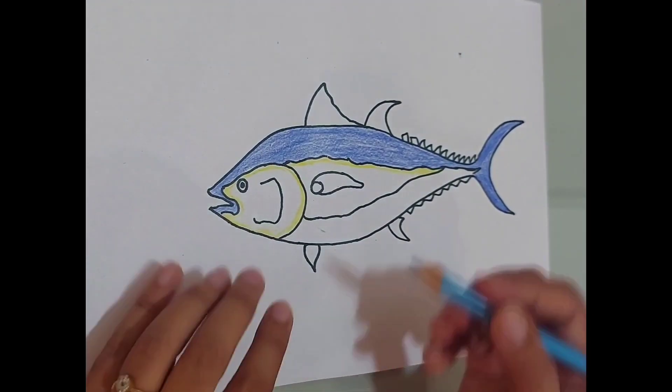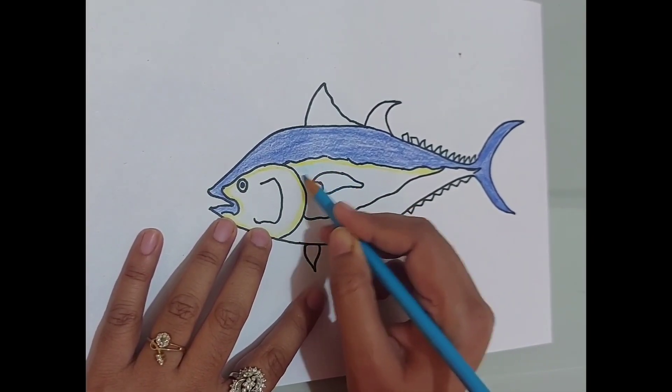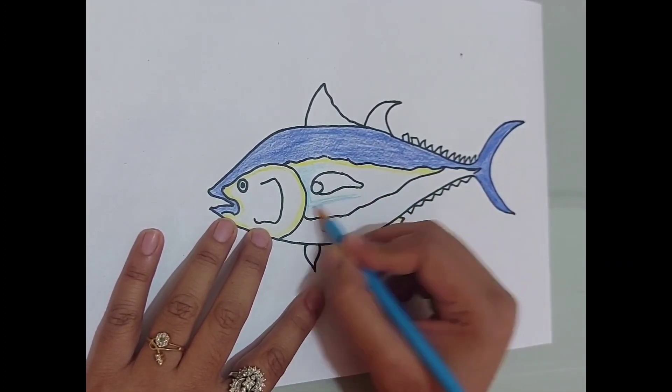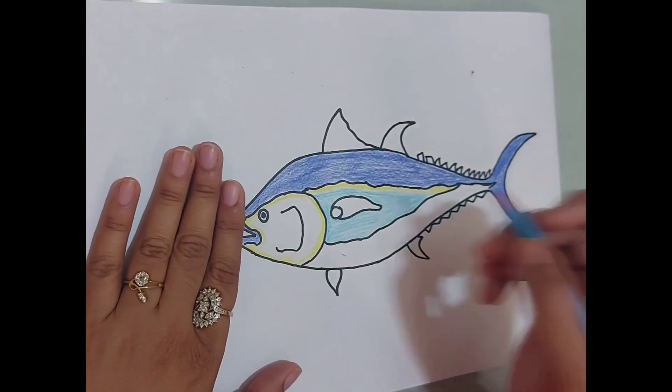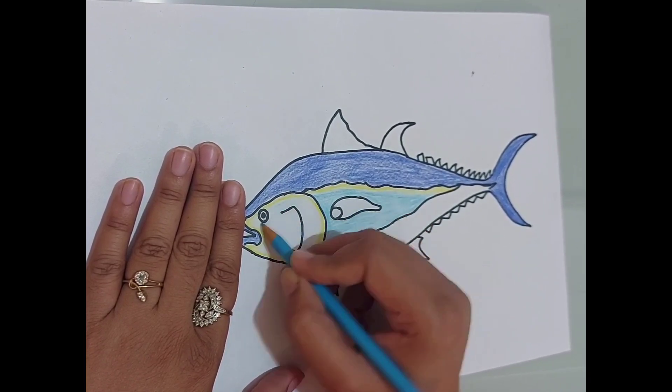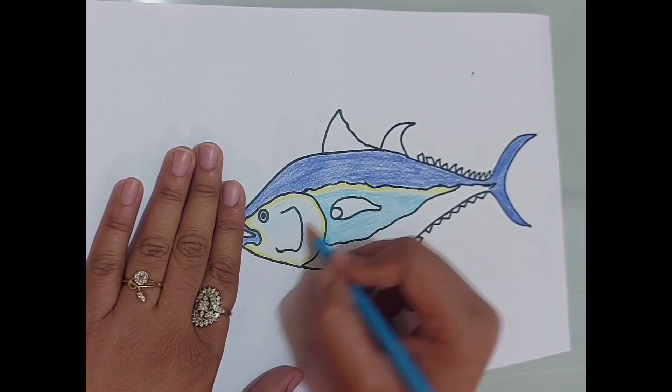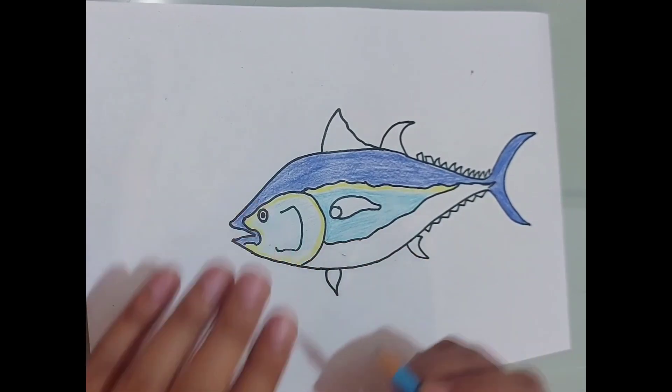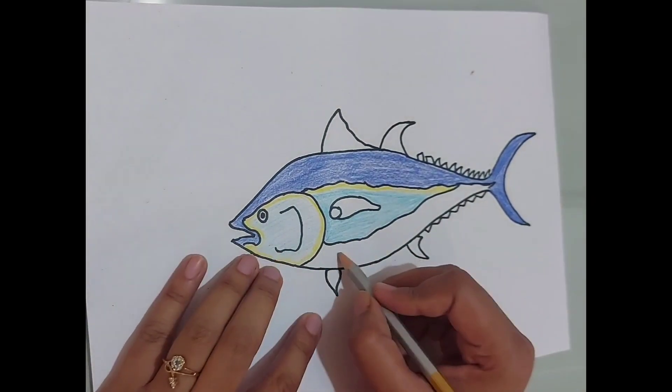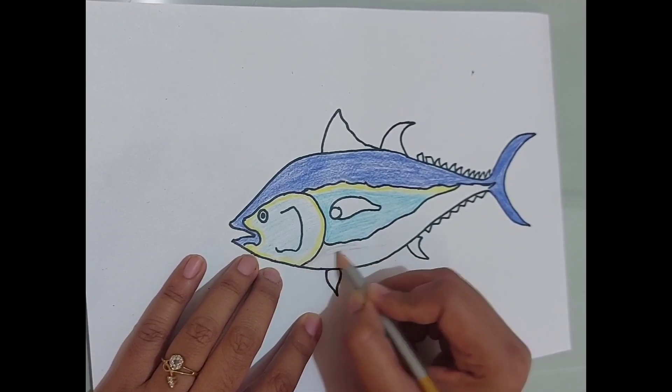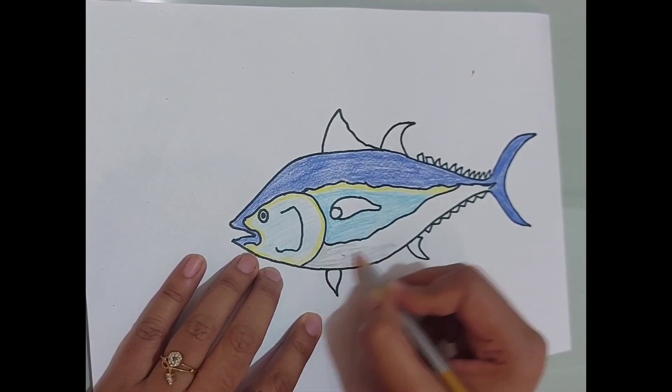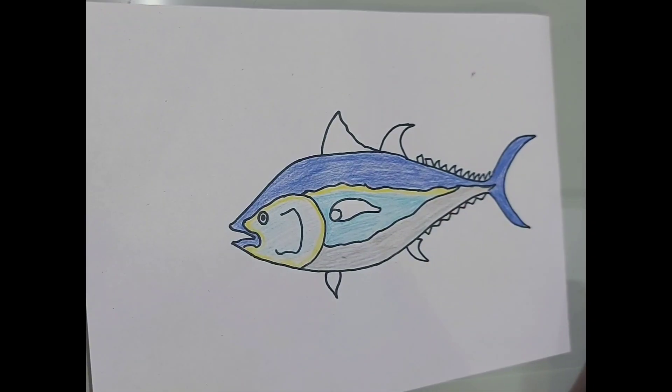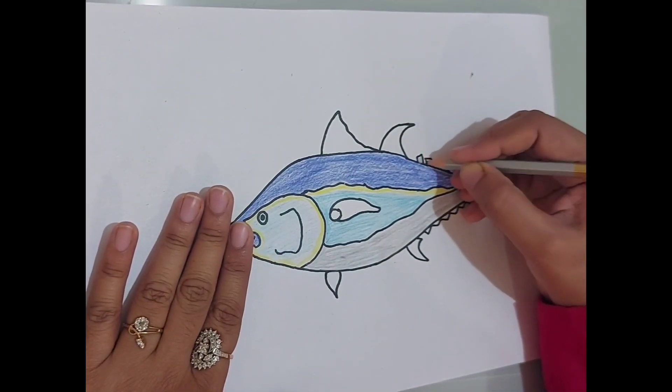Now we will do the sky blue color in the body of the fish. Do some sky blue color in the face - a very light shading. Now we will do some gray color shading at the bottom, and here also we will do the gray color.